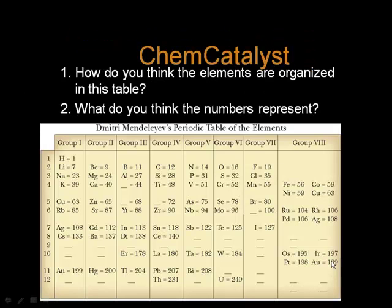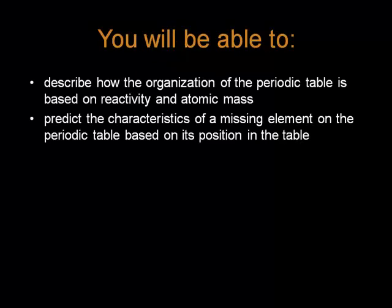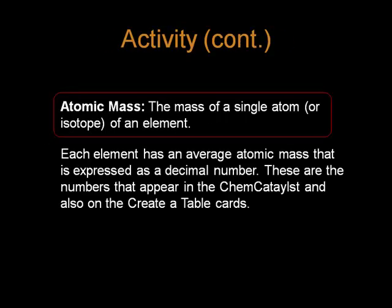In class today, you guys saw that the elements are organized according to the properties and by the atomic mass from Dimitri Mendeleev's original periodic table. We know the organization of the periodic table is based on reactivity and atomic mass, and the characteristics of a missing element can be predicted based on the patterns and trends in the table.